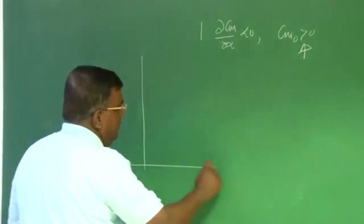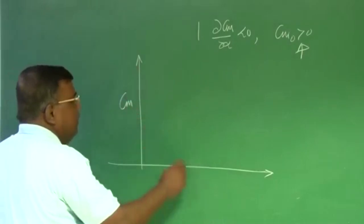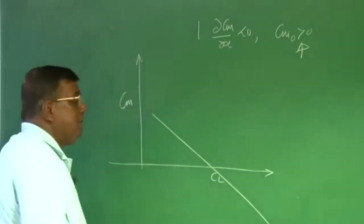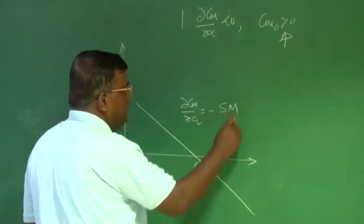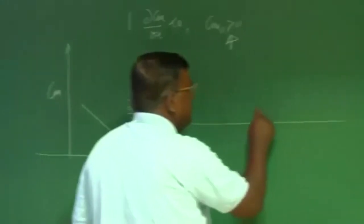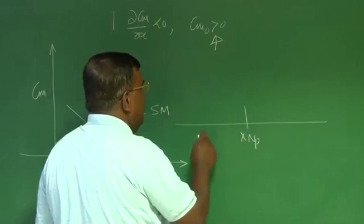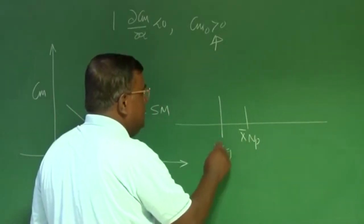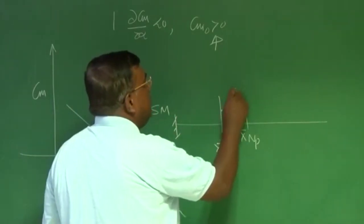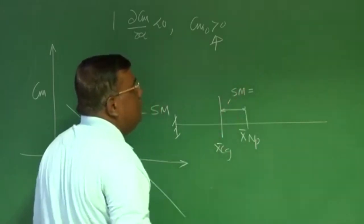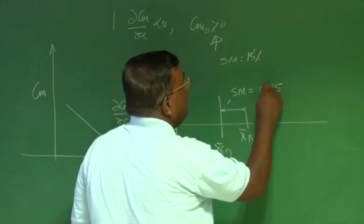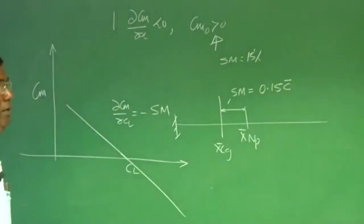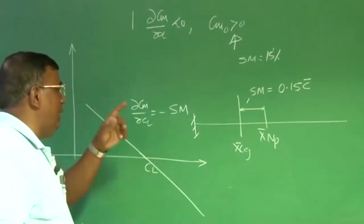We started by conceptualizing the design: I know CM versus CL, and this slope DCM/DCL is nothing but minus the static margin. Static margin is defined as the distance between the neutral point and the CG, expressed as a percentage of chord. If I say 15% static margin, that means this gap is 0.15 C-bar, where C-bar is the mean aerodynamic chord of the wing.